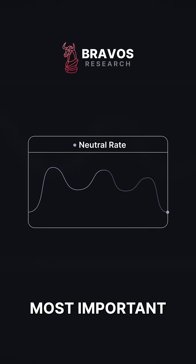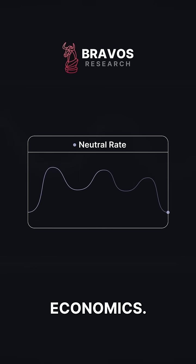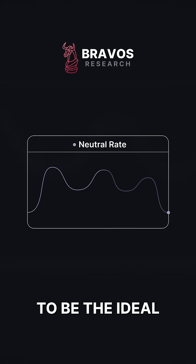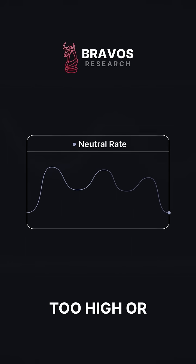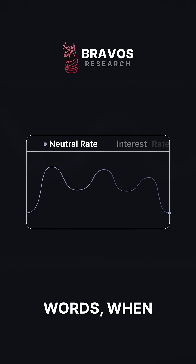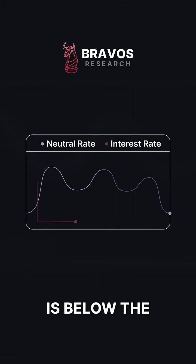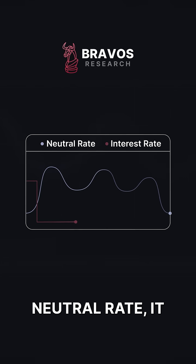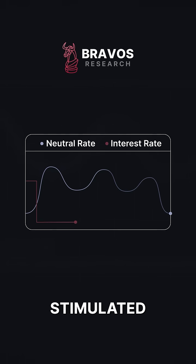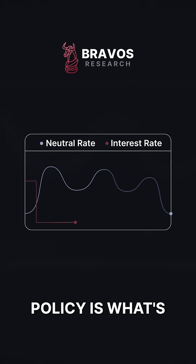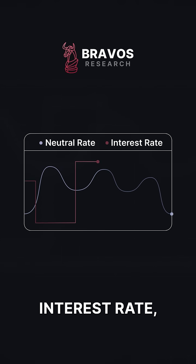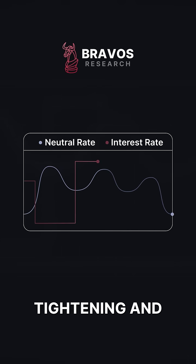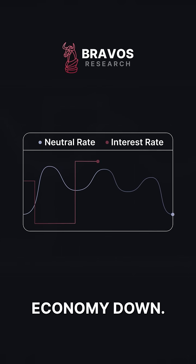The neutral rate is one of the most important concepts in economics. It's supposed to be the ideal interest rate for the economy — not too high and not too low. When the Federal Reserve's interest rate is below the neutral rate, the economy is being stimulated and monetary policy is what's called loose. If the Fed raises their short-term rate above the neutral rate, they are tightening and slowing the economy down.